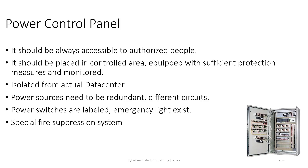The power room — which includes the UPS, generator, and power control panel — should have a smoke detector and fire suppression system. This fire suppression system should be adequate and relevant to the asset being protected. For example, we cannot use water; we should use a special material that can deal with electrical equipment.